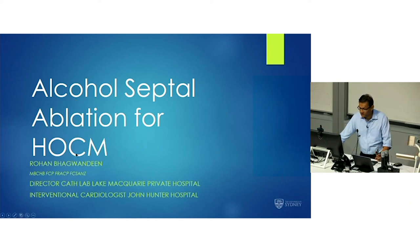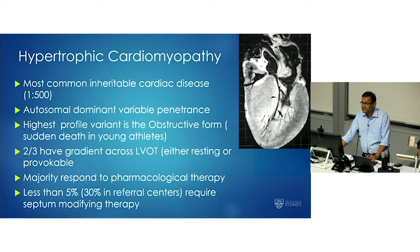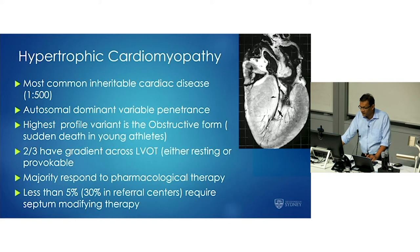I've been tasked with talking about alcohol septal ablation for hypertrophic cardiomyopathy. As a preamble, we know that this is the most common inheritable cardiac disease — one in 500 — with an autosomal dominant variable penetrance. The highest profile variant is the obstructive form with sudden death in young athletes, often in the media. Two-thirds of these patients have a gradient across their left ventricular outflow tract, either resting or provocable. The majority respond to pharmacological therapy, so less than 5% — and that would be 30% in quaternary centres — require septal modifying therapy.